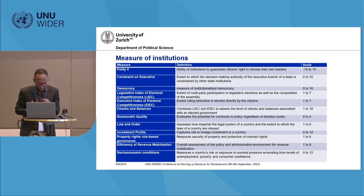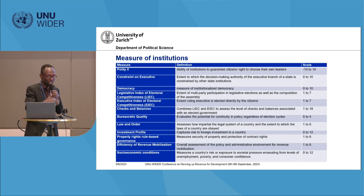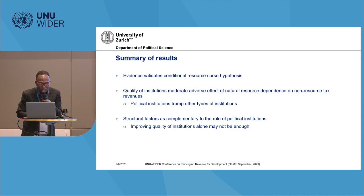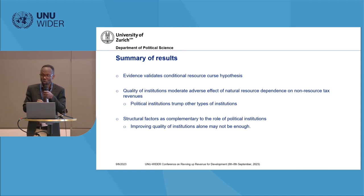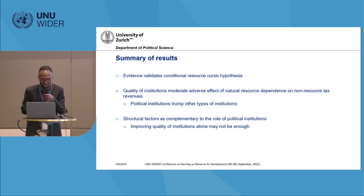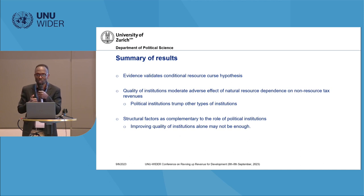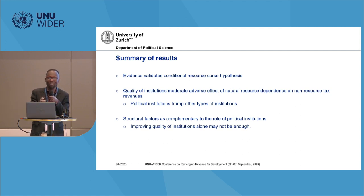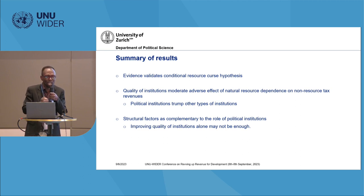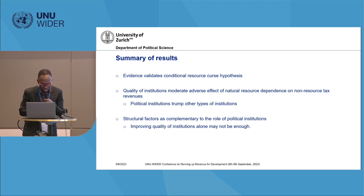We explore 12 different types of institutions to understand whether they mitigate the adverse effect of natural resource dependence on the ability of countries to mobilize non-resource taxes. Our summary findings are: first, we find evidence of a conditional resource curse hypothesis — the quality of institutions can mitigate or moderate the adverse effect of natural resource dependence on non-resource tax revenues. We see a significant case for political institutions relative to the other types, but other factors also play a complementary role.